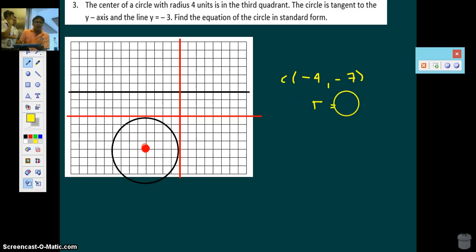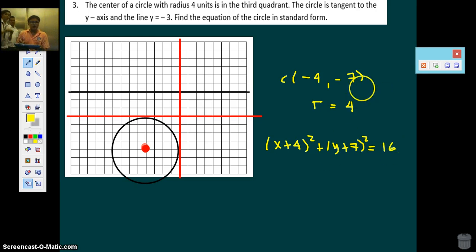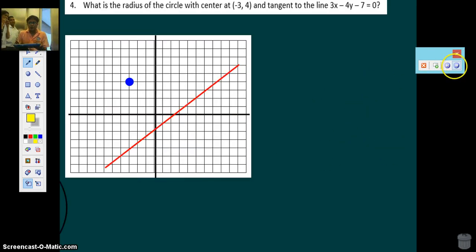So the radius is 4. Now we have the center. We have the radius. Then the standard form is x plus 4 squared plus y plus 7 squared equal to 16. I'm done with the third. Let's go to the fourth.